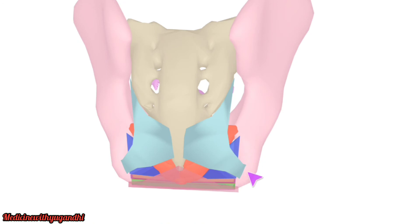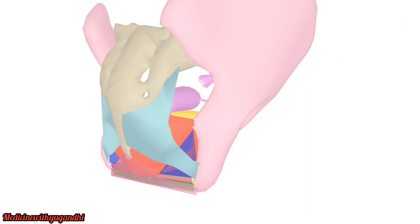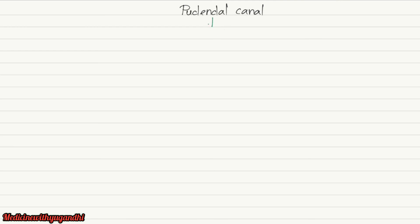The pudendal canal is located on the lateral wall of the ischioanal fossa. It is also called Alcock's canal. It is also referred to as a fascial tunnel since it is present between the obturator fascia and the lunate fascia.